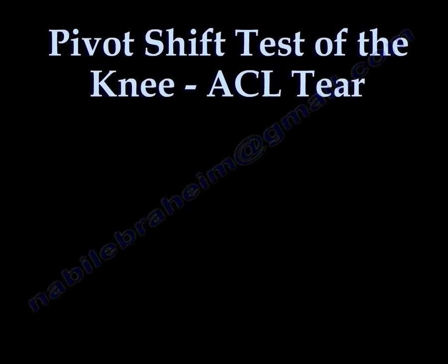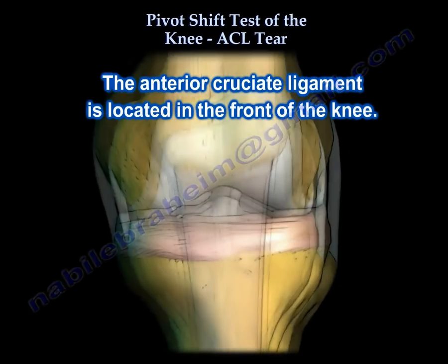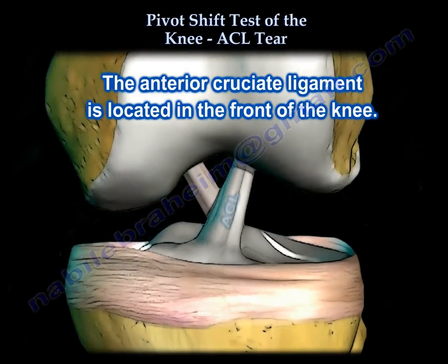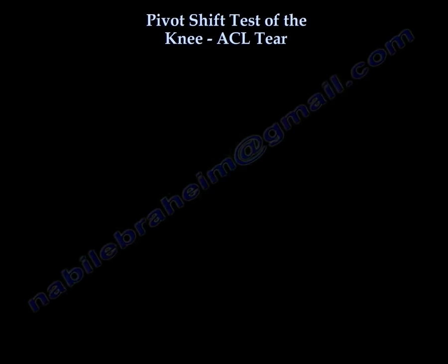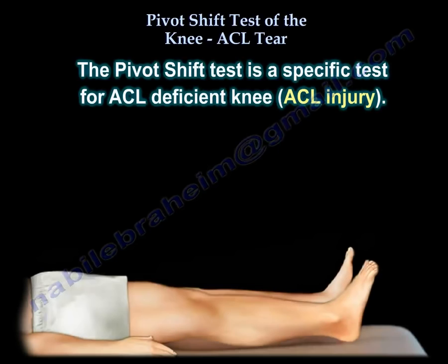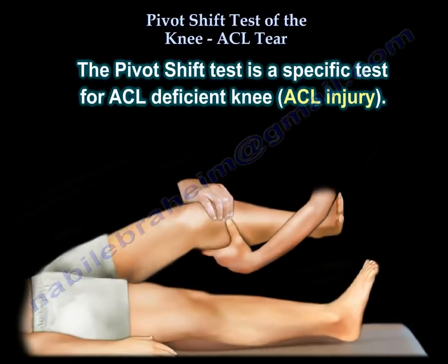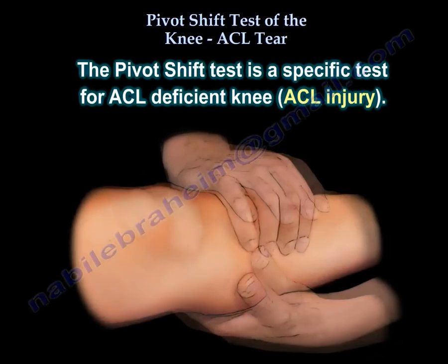Pivot shift test of the knee for ACL tear. The anterior cruciate ligament is located in the front of the knee. Rupture of the ACL is a condition commonly seen in sports, usually due to a non-contact pivoting injury. The pivot shift test is a specific test for an ACL-deficient knee.